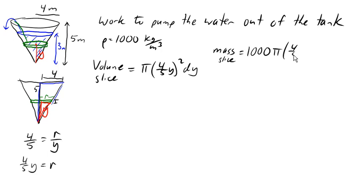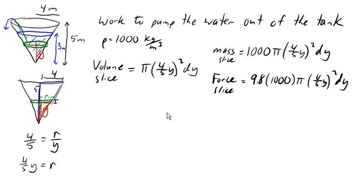And so then the force on that slice will be gravity times the mass, right? Mass times acceleration. And we're going to use 9.8 here for gravity. So 9.8 times 1,000 times pi times 4 fifths Y squared dy. And now we can talk about the work required to lift that slice.